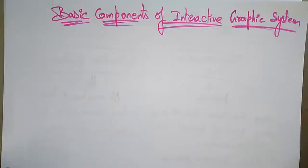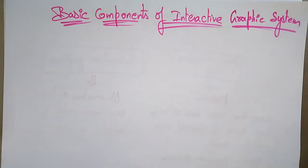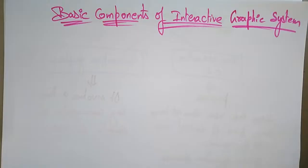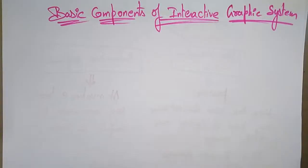Welcome back students. Let's continue with computer graphics. The next topic is the basic components of the interactive graphics system. In the previous video, I explained what interactive and non-interactive meant. Non-interactive is passive and interactive is active — those two terms you have to remember. Interactive means there is communication between the computer and the user, but in non-interactive, the user does not have any kind of control over the system.